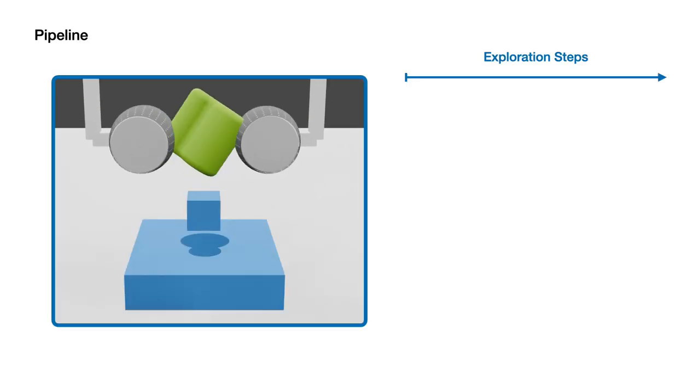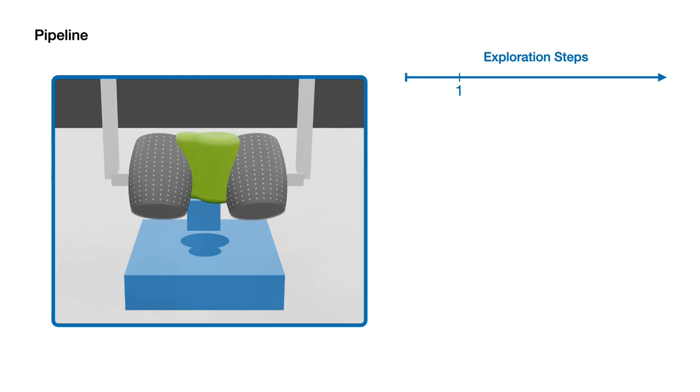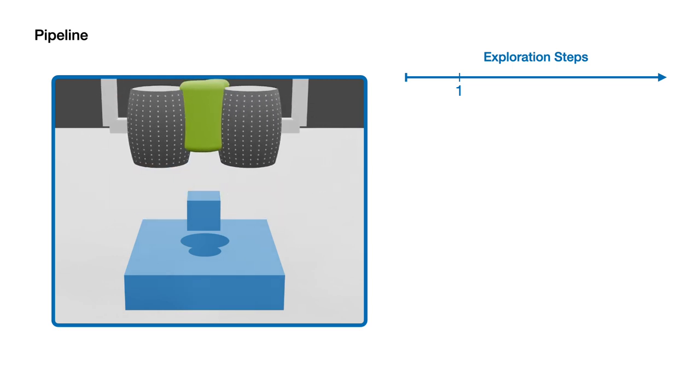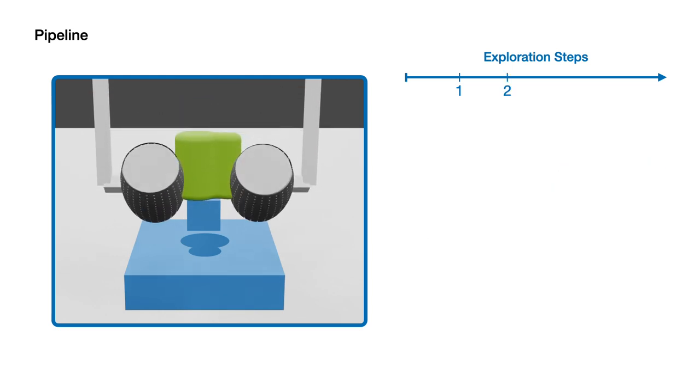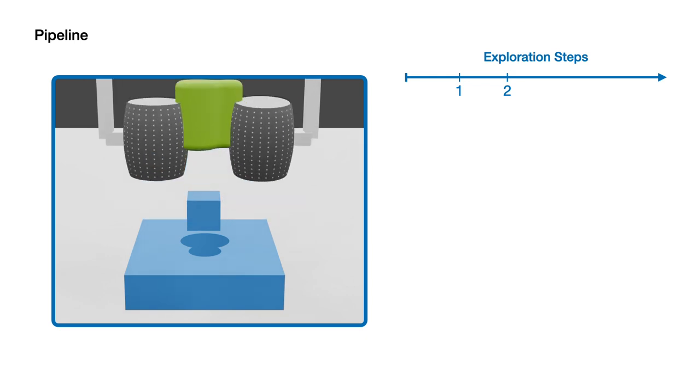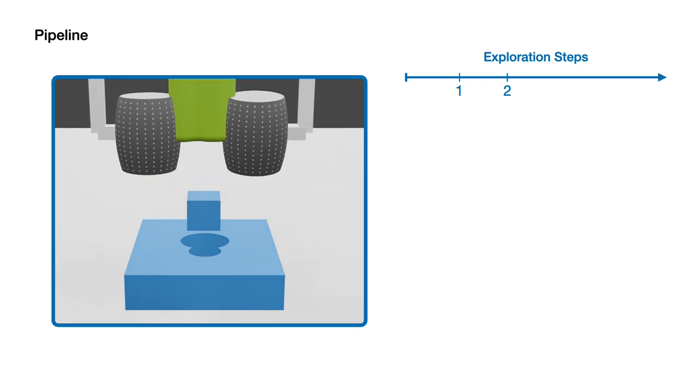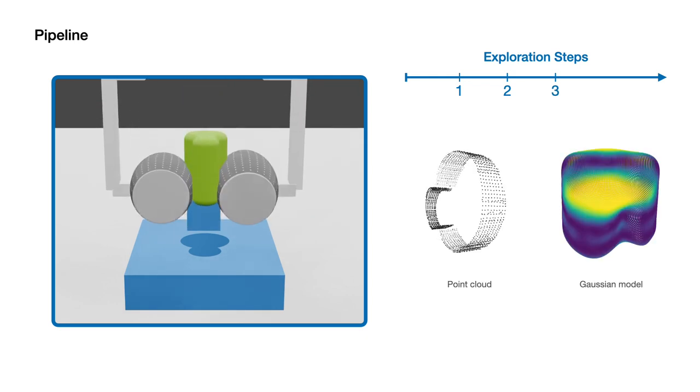We demonstrate the benefits of our algorithm in simulation. We show that by using a Gaussian model to estimate the object's shape and Bayesian optimization to strategically select the areas of the object to explore, we can reduce the number of exploration steps required to complete the insertion task.